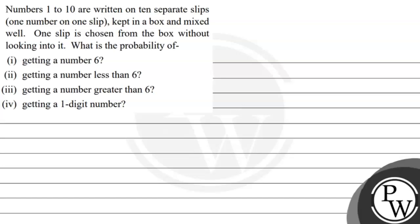Let's see the question. Numbers 1 to 10 are written on 10 separate slips, one number on one slip, kept in a box and mixed well. One slip is chosen from the box without looking into it. What is the probability of: part one, getting a number 6; part two, getting a number less than 6; part three, getting a number greater than 6; part four, getting a one-digit number.